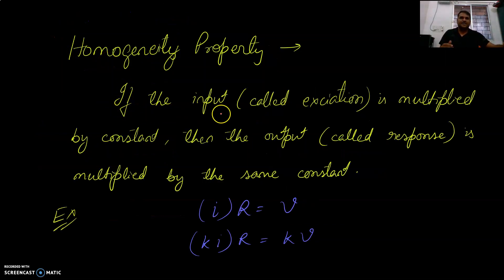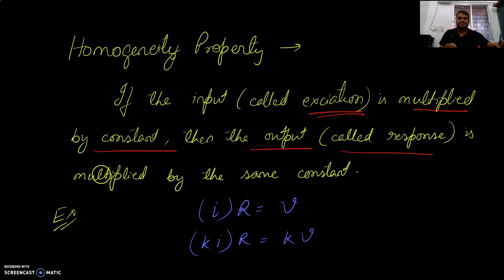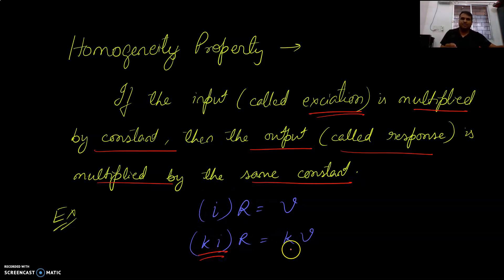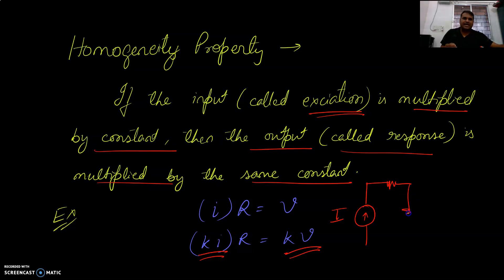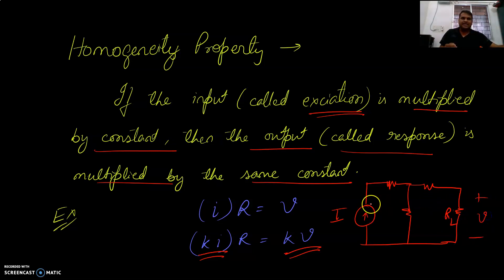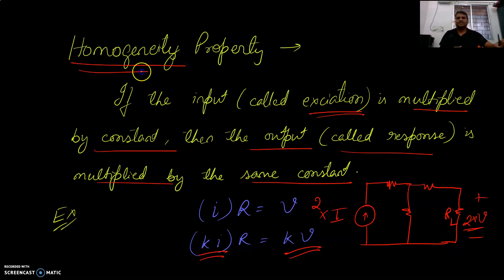If the input, called excitation, is multiplied by a constant, then the output, called response, is multiplied by the same constant. You can take input as K multiplied with current and get a response of K multiplied with voltage. For example, if a current source with current I is connected through some resistors to a load resistance RL giving voltage V, and multiplying the current by 2 also multiplies the output voltage by 2, then this circuit has the homogeneity property.